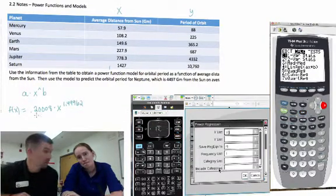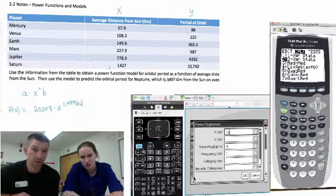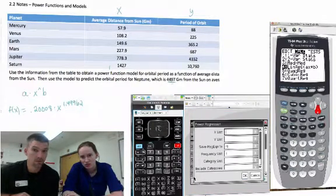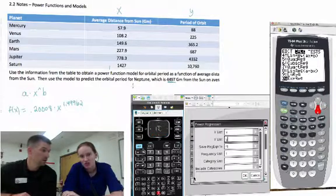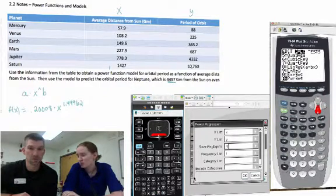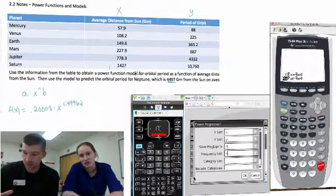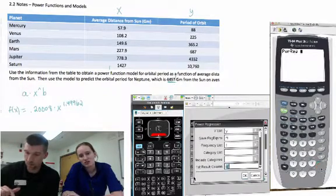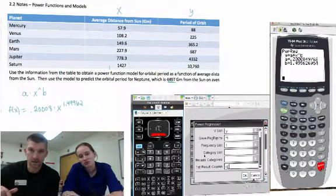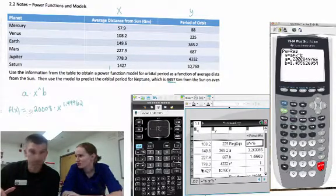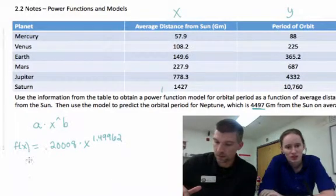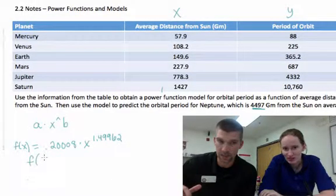And so then once you have your equation, which we've got right here, it says use the model to predict the orbital period for Neptune. Hey, what's the orbital period for Neptune? Well, 4497 gigameters—I think those are gigameters, I'm pretty sure I looked that up—from the sun. Because you know, G, like yo G. Yeah, gangster, thug life. But not really. Can I see that? Yes, okay, so are we plugging that in for x? Plugging that in for x, okay.